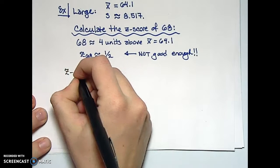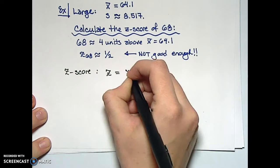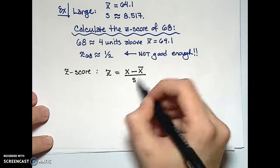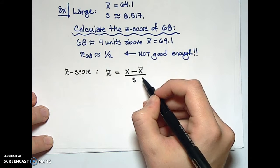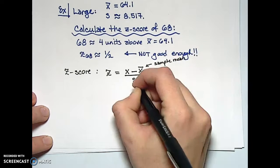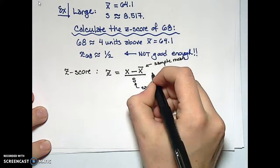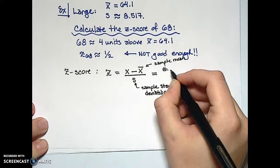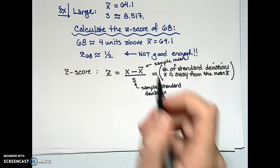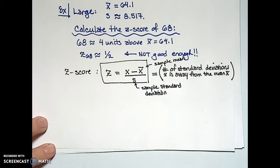So what is the formula for the z-score? Here it is: to calculate the z-score, we take our specific data value, subtract our mean, and divide by the standard deviation. This is in terms of sample values, so this is the sample mean and this is the sample standard deviation. When we perform this computation, it results in the number of standard deviations my specific value x is away from the mean.